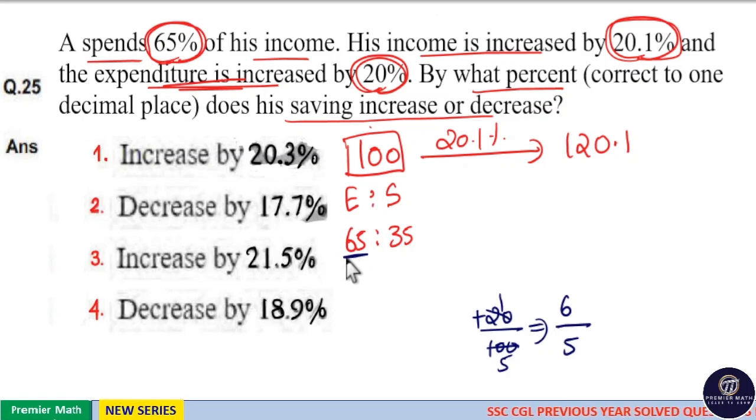Now, we already know initially expenditure was 65 rupees. So, this 5 parts is the initial expenditure. So, 5 parts is 65 means 5 into 13 is 65. Then, new expenditure is 6 parts, which is 78 rupees. New expenditure is 78 rupees.